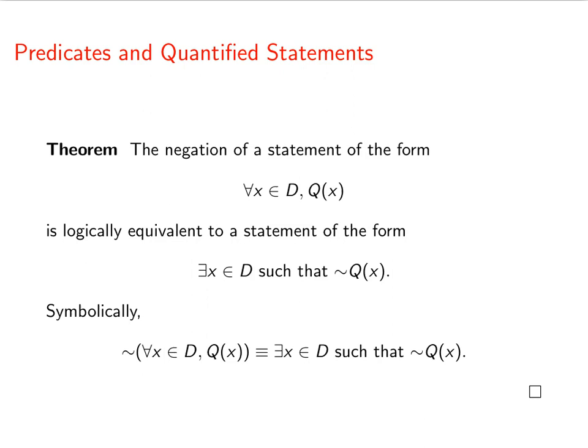So here's a theorem. We can say that the negation of a universal statement of this form, for all x in D, Q of x, that's logically equivalent to a statement of the form there exists x in D such that not Q.